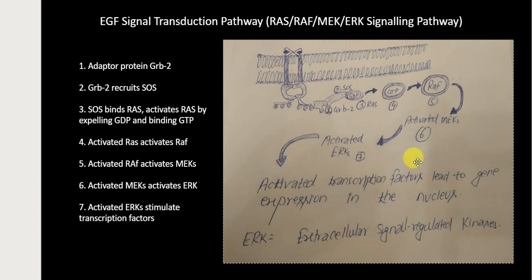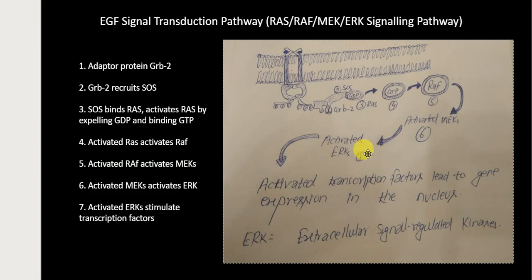To summarize the key points: the phosphorylated carboxyl terminal region of the EZF receptor acts as an anchor for the adapter protein GRB2. GRB2 recruits SOS, which binds the RAS protein. RAS is activated by expelling GDP and binding GTP. Activated RAS activates RAF, activated RAF activates MEK, activated MEK activates ERK, and ERK activates transcription factors leading to gene expression in the nucleus.